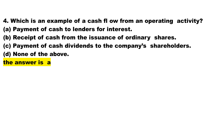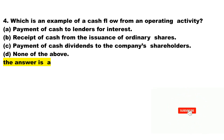Question 4. Which is an example of a cash flow from an operating activity? A. Payment of cash to lenders for interest. B. Receipt of cash from the issuance of ordinary shares. C. Payment of cash dividends to the company's shareholders. D. None of the above. The answer is choice A.